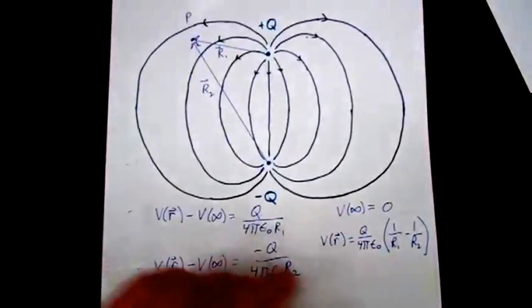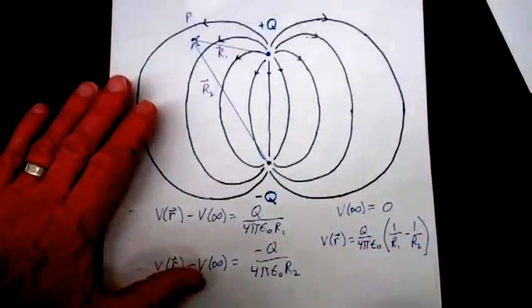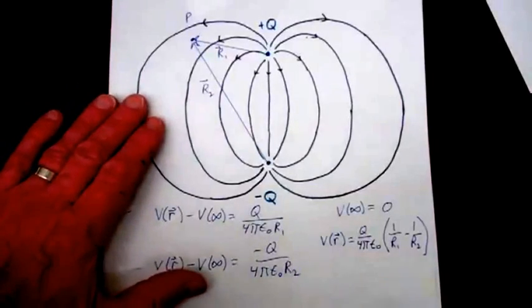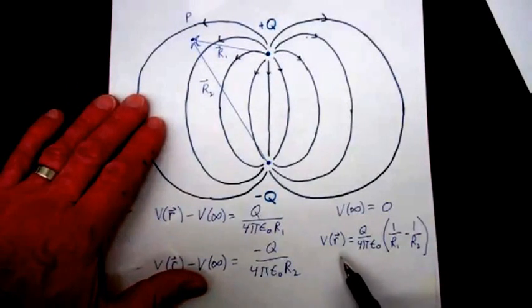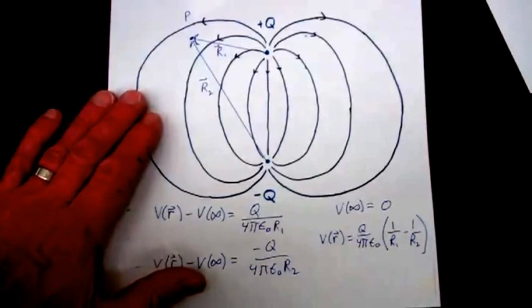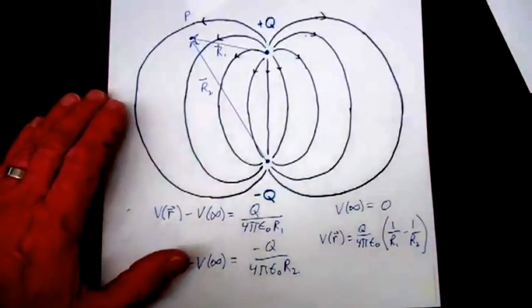If we wanted the electric field everywhere, we could just take the gradient of this scalar potential field.